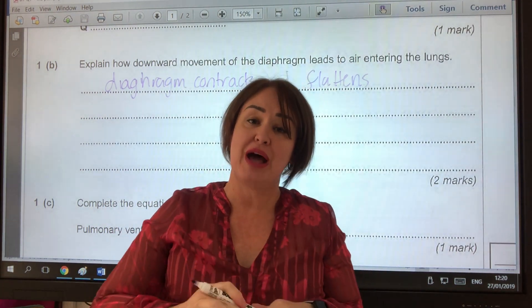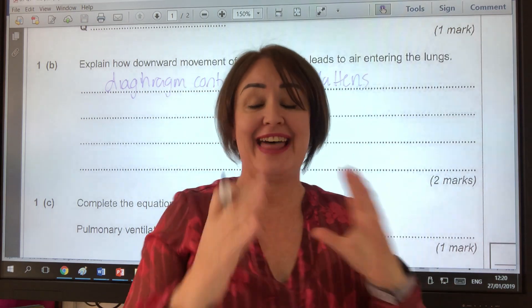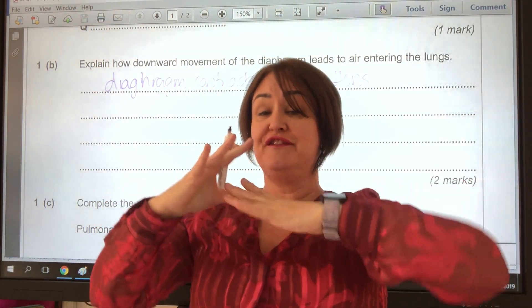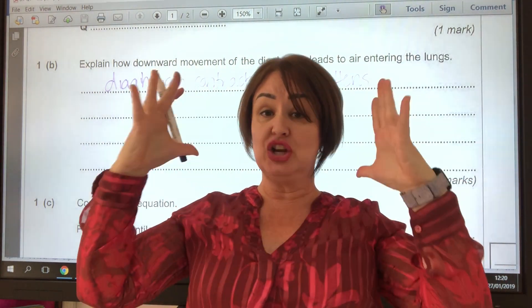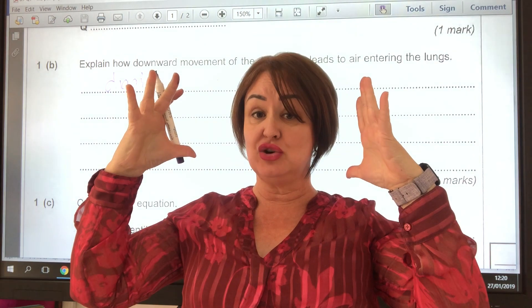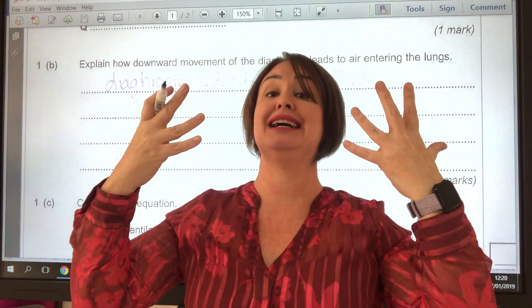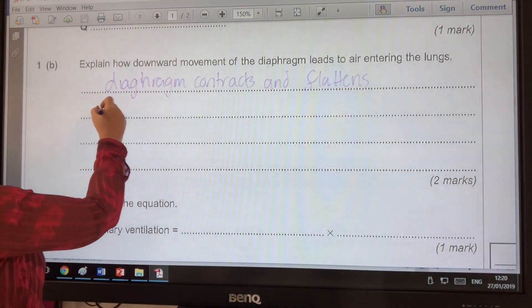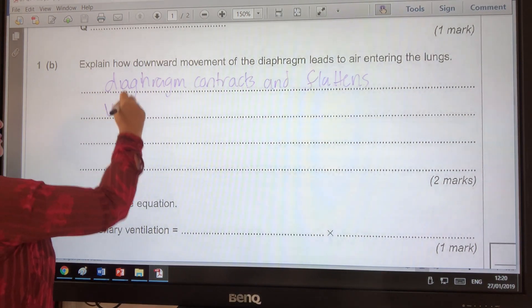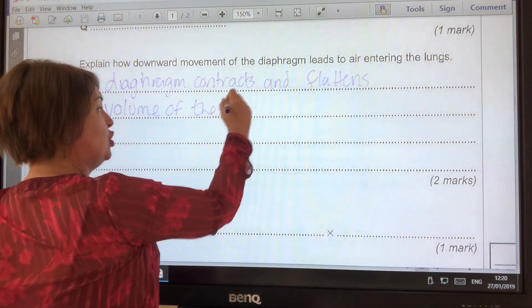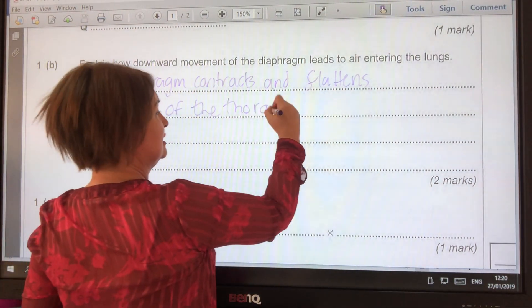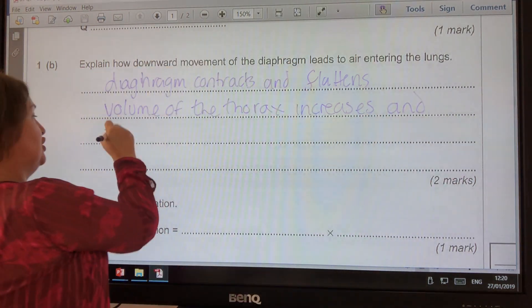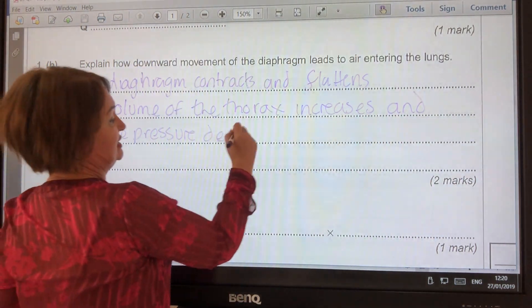From that, we then need to say that if the diaphragm goes down, the volume of the thorax increases, but the pressure inside decreases. So: the volume of the thorax increases and the pressure decreases.